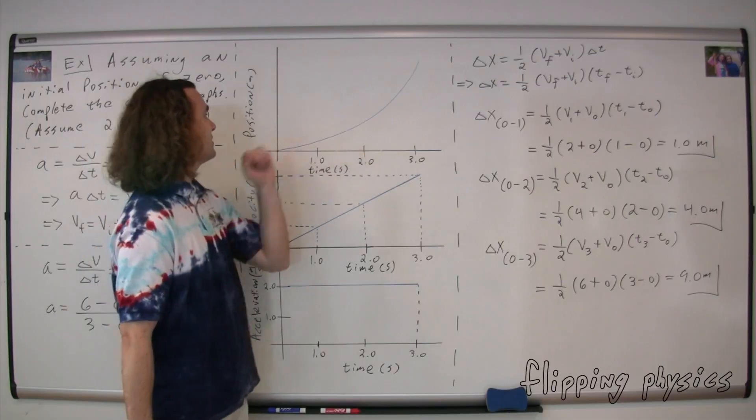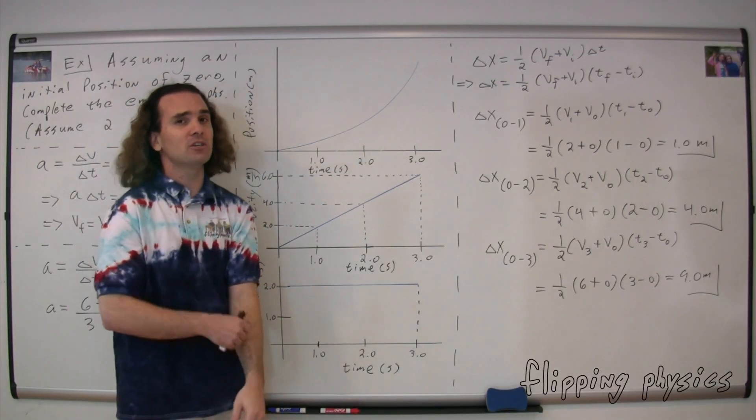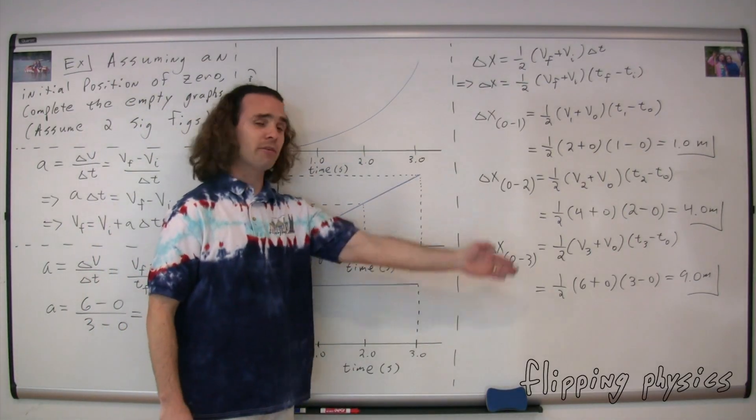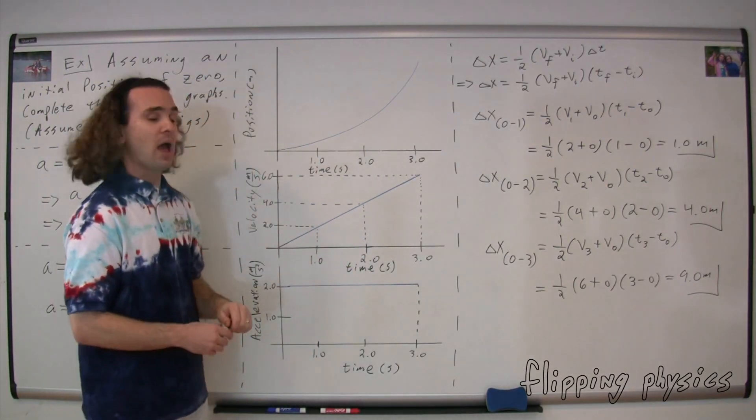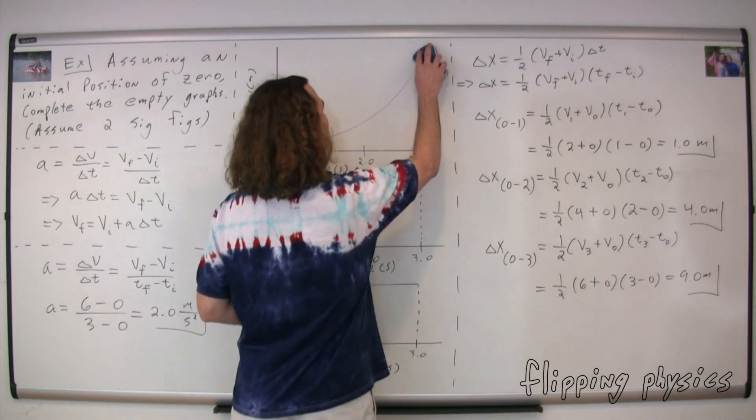I'm now going to erase this approximate graph of position as a function of time. How are we going to take this information and draw our position as a function of time graph? You plot the three points and then add the upward sloping curve. At one second the position is one meter; at two seconds the position is four meters; and at three seconds the position is nine meters. Then you just draw the upward sloping curve through those points.